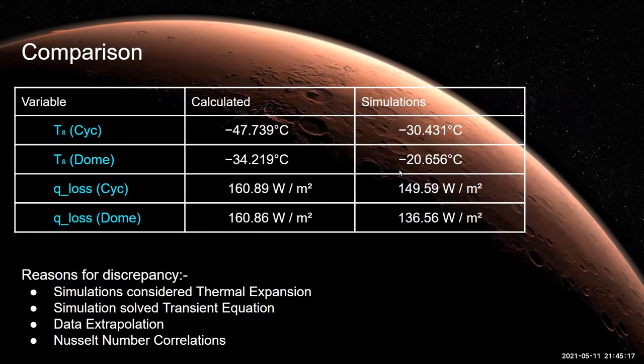Now we can see the table which consists of all four variables which are found out by calculations and simulations and we can clearly see the difference between calculated values and simulated values. Following are the reasons for such difference.